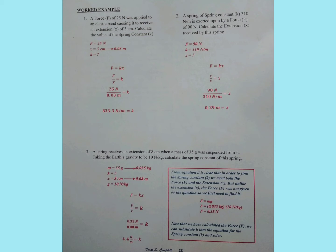Next, we write the formula: F is equal to KX. That's the Hooke's Law equation. But since we are being asked to find K and not F, we will have to make K the subject. Moving X — it is multiplying on one side, so when it goes to the other side it will be dividing. So in essence, the equation becomes K equals F over X.